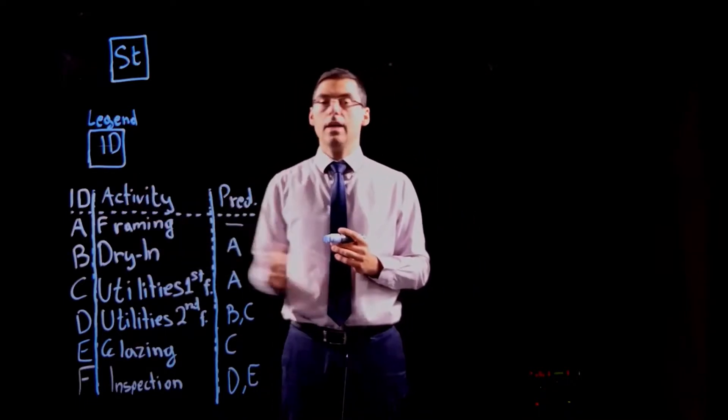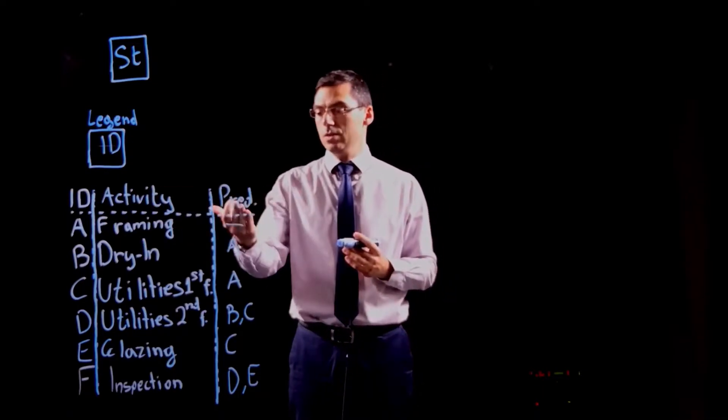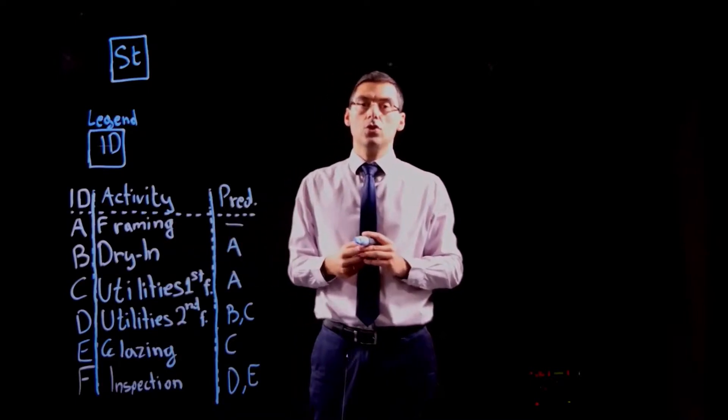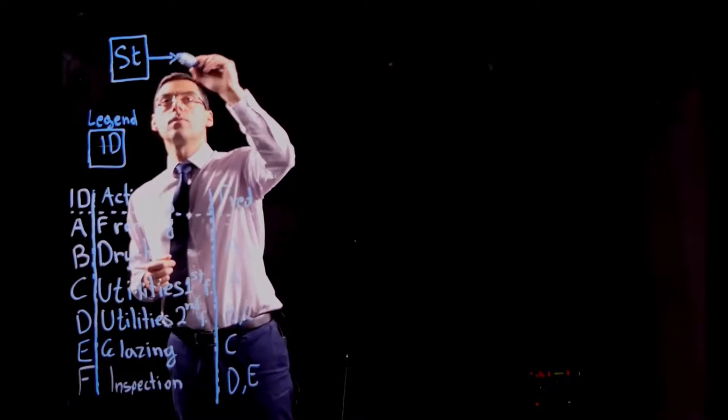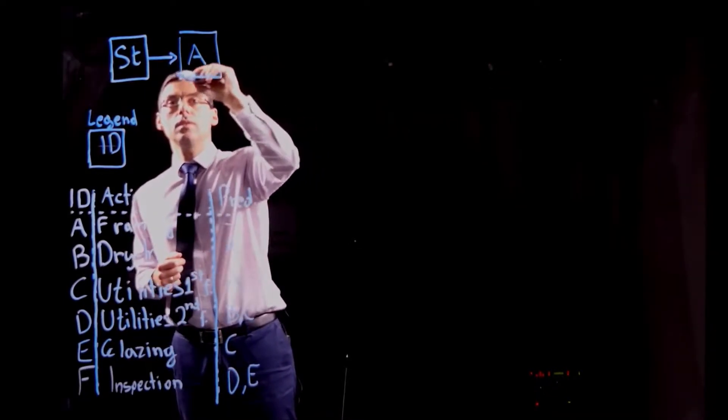In the table we see the ID of the activities, the activities themselves, the names, and here you see the predecessors. So activity A doesn't have any predecessor and it can be put into the network. There you go. That's activity A.